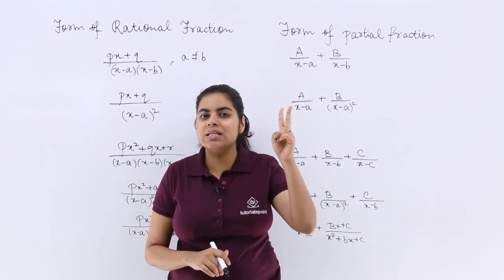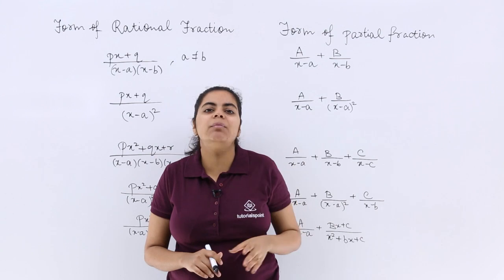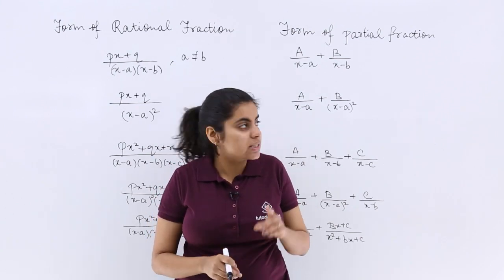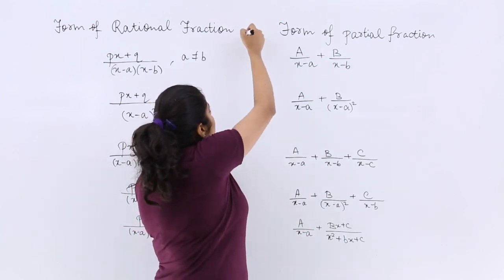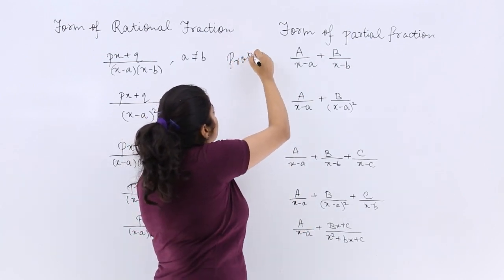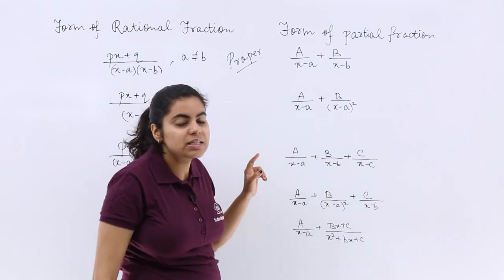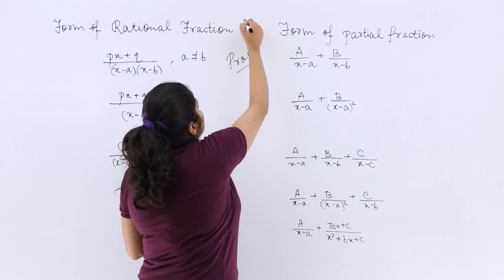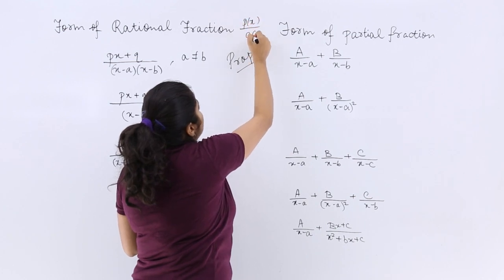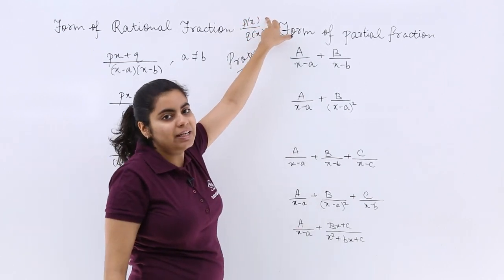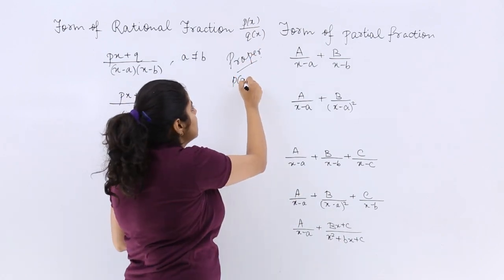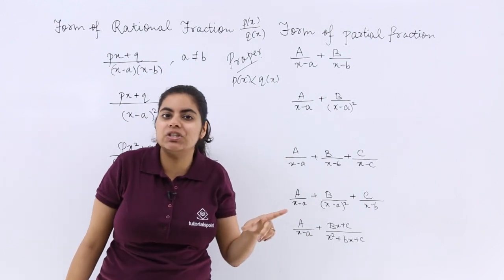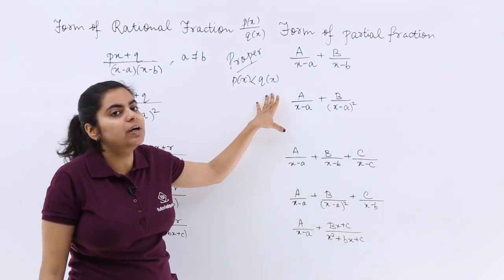The second type is called the improper rational number. Proper rational numbers are those numbers wherein if a rational number is given to you of the form px upon qx, the degree of the numerator px will be less than the degree of the denominator. That type of rational number is called a proper rational number.